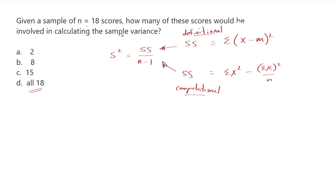You're going to perform the same operation on every single one of the scores involved in your sample, or if we were doing a population, in your population. So in other words, whenever you see a summation sign, you're going to be involving every individual score, all 18 scores. So the answer is going to be all 18.